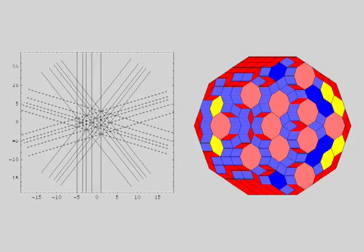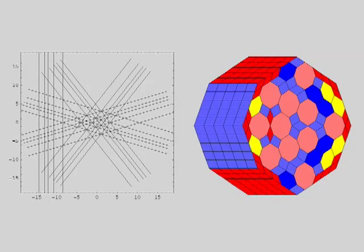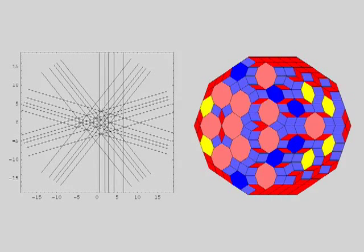The generalized dual method somehow transforms an arrangement of lines into a tiling by zonagons.